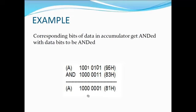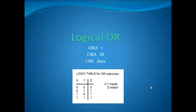This is the example of the AND instruction. In logical OR, here you can see the logical table. It gives output 1 when any of the inputs is 1.